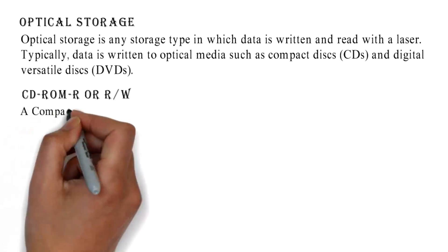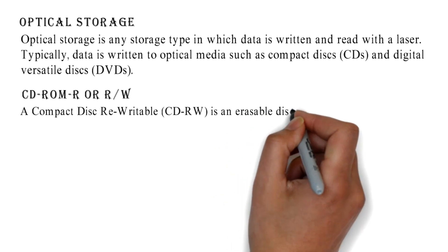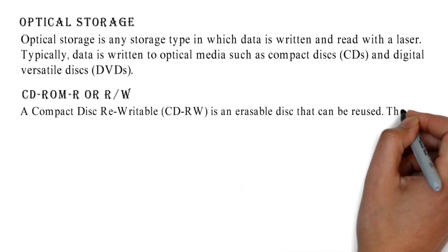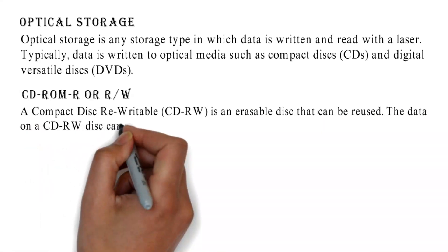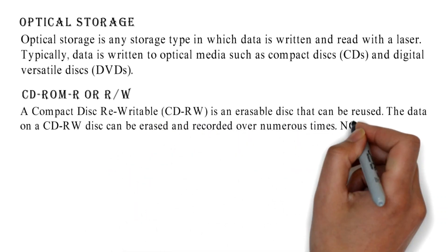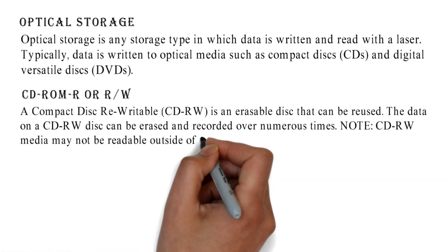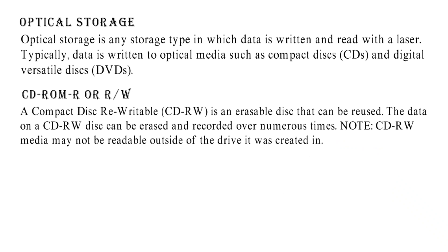CD-ROM R or R/W: A compact disk rewritable (CDRW) is an erasable disk that can be reused. The data on a CDRW disk can be erased and recorded over numerous times. CDRW media may not be readable outside of the drive it was created in.